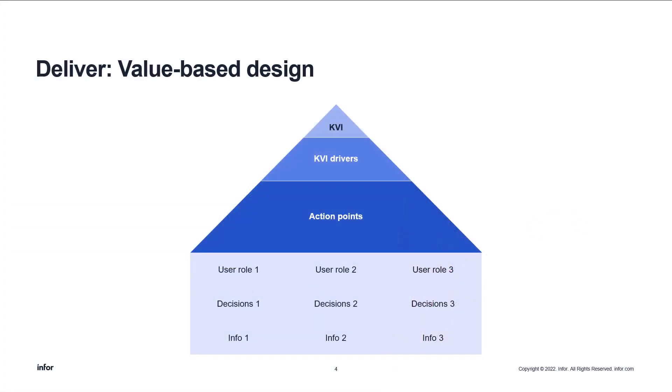We will start with a house of value — it is called a house of value because it looks like a house. This is the information we need to be able to create a series of dashboards. We will concentrate on the top part, the roof of the house, and leave out different user roles and their impact on the dashboard.